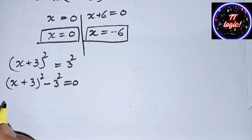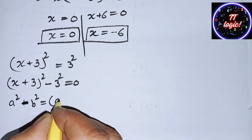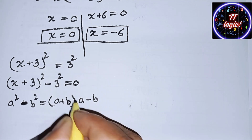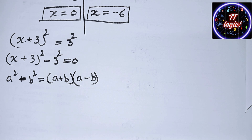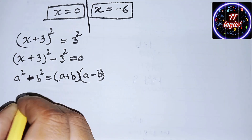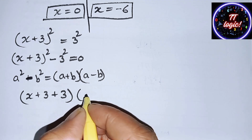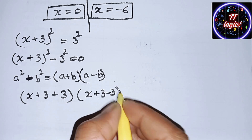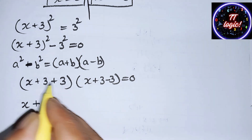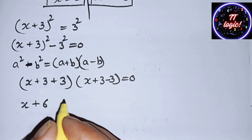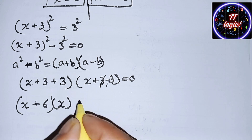We can also use another algebraic identity: a² − b² = (a + b)(a − b). Applying this to our equation, we get (x + 3 + 3)(x + 3 − 3) = 0. Now x + 3 + 3 = x + 6, and x + 3 − 3 simplifies, with the 3s cancelling to give x.